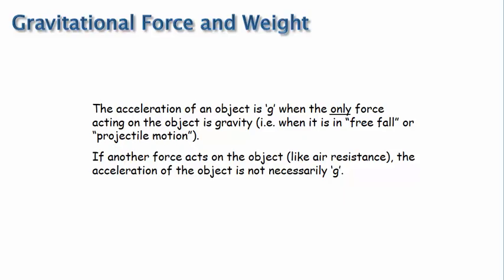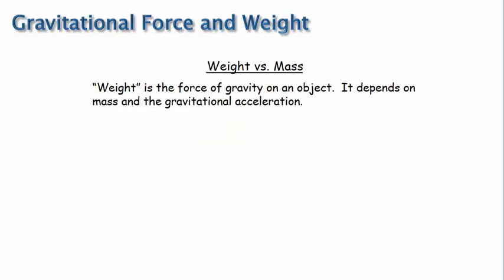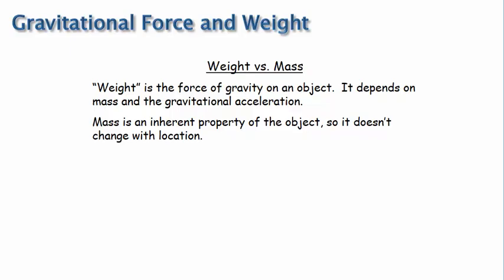The next thing I want to discuss is the difference between weight and mass. As we said before, weight is the force of gravity on an object. Because weight is mg, it depends on mass and gravitational acceleration. Mass, on the other hand, is an inherent property of the object, so it doesn't change with location.